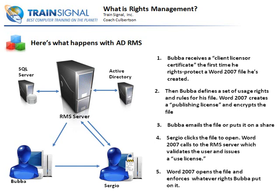Since Sergio is on the list, he's also going to get a decryption key from the use license that is issued from the RMS server. Sergio gets to decrypt and then do with the document as Bubba has allowed him to do. This is a big deal in terms of putting the encryption, protection, and security of a document on the user rather than on us as administrators. The users get to decide who gets to open the document, who gets to print it, or whatever it may be — however the user decides to secure that document is what's going to happen.